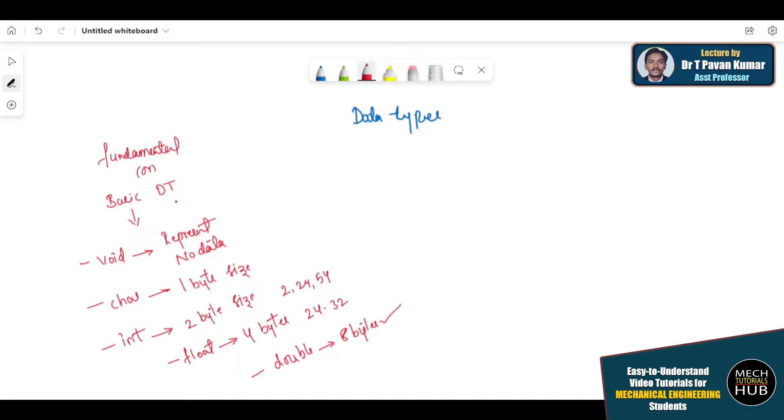This is all about basic or fundamental data types: void, char, int, float and double. I hope you understood and try to remember these sizes, this is also important. Here character is nothing but you can write some text. This particular void does not have any size because it does not return any data.